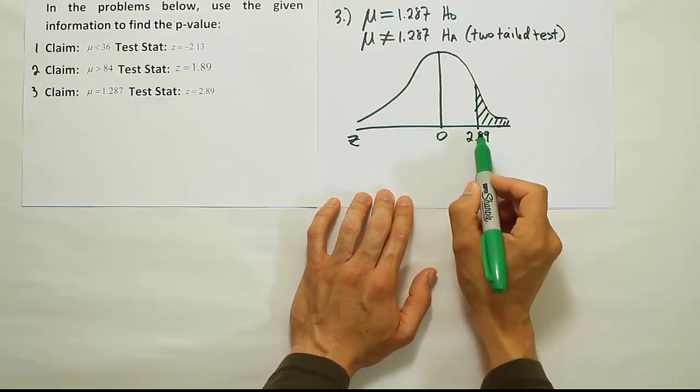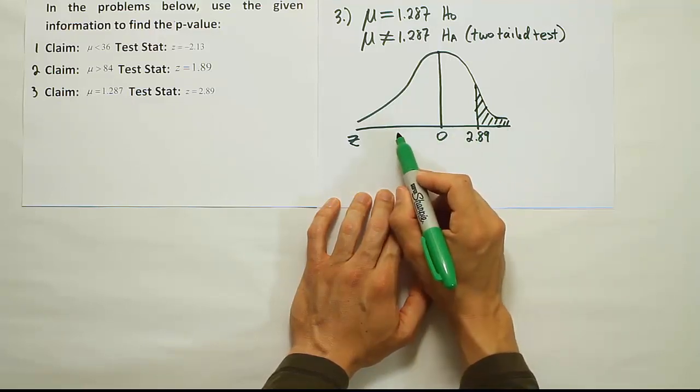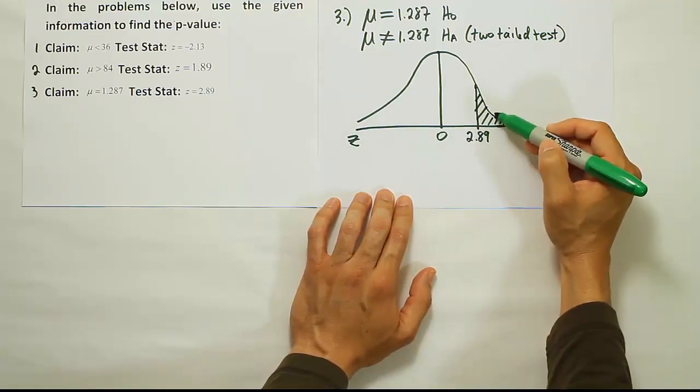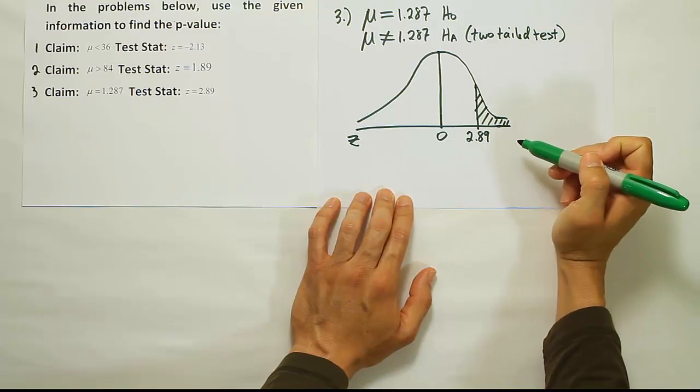But you can be this far away from 0 on the right-hand side and also that far away on the left-hand side. That's why we double the area we get here. So either way, you find the tail area and you double it when it's a two-tailed test.